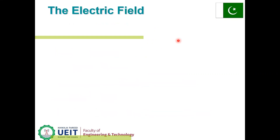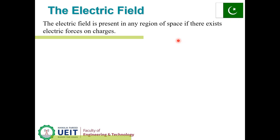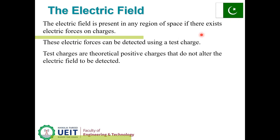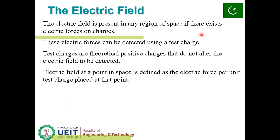What is electric field? The electric field is present in any region of space if there exist electrical forces on charges. These electric forces can be detected using a test charge. Test charges are theoretical positive charges used to detect the electric force. The electric field at any point in space is defined as the electric force per unit test charge placed at that point.